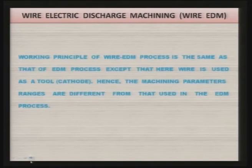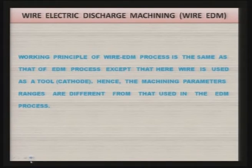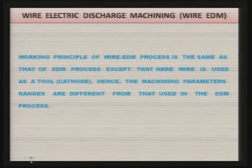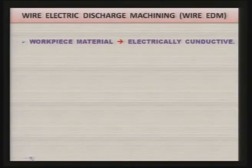The working principle of wire electric discharge machining is the same as that of electric discharge machining, which I have already discussed in the last two lectures, except that in wire EDM, a wire is used as a tool — that is, the cathode — instead of a solid, large-sized tool or cathode. Hence the machining parameter ranges are different. The basic condition remains the same: the workpiece material should be electrically conductive, and the workpiece is made the anode under normal polarity.